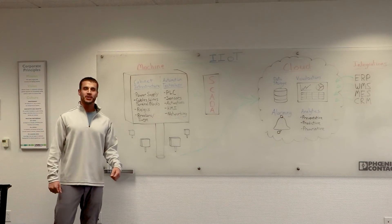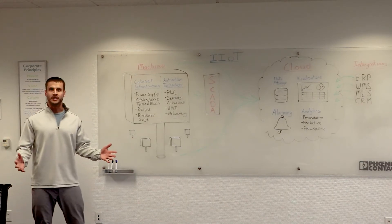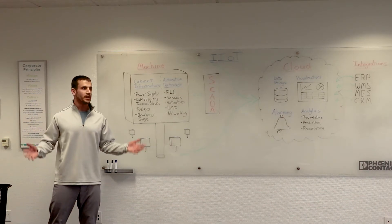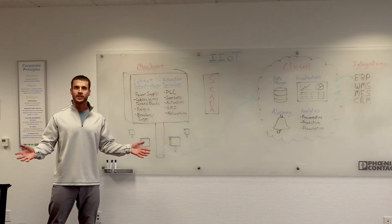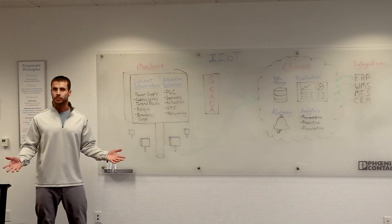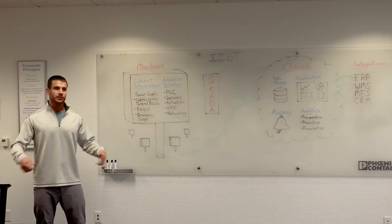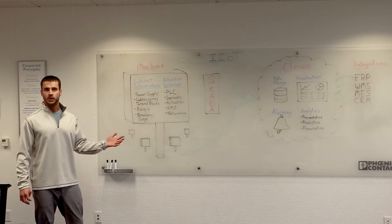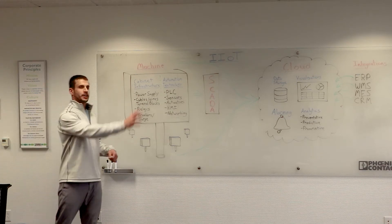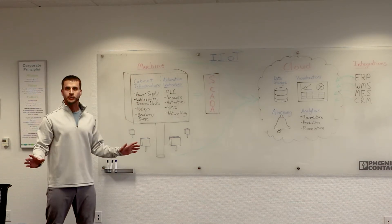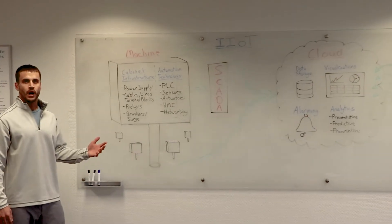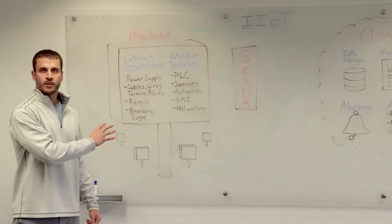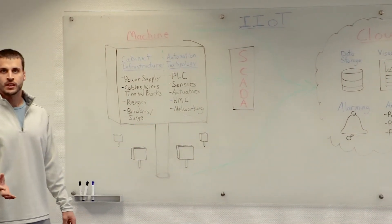Welcome, everyone. There's been a lot of hype and buzz around the industrial internet of things lately, yet I still get a lot of questions every day. What is the industrial internet of things, or IIoT? What components make up an IIoT system? I'd like to use the next few minutes to walk through an example to help try to answer some of those questions. I could really start anywhere within the IIoT ecosystem, but for the purpose of this example, I'm going to start at the machine level, because this is where a lot of the very valuable data for an IIoT application originates.